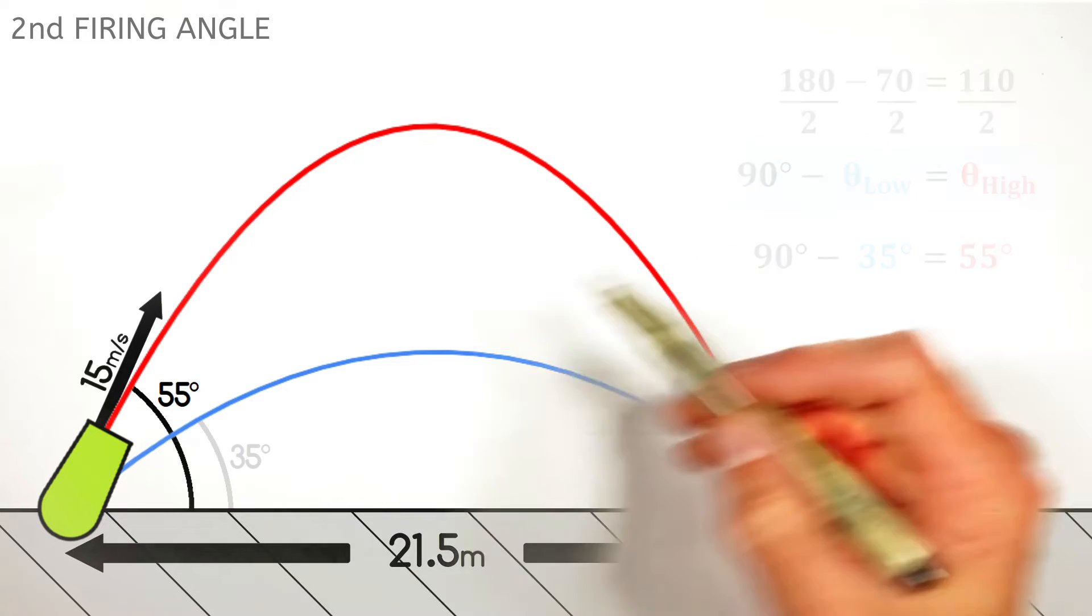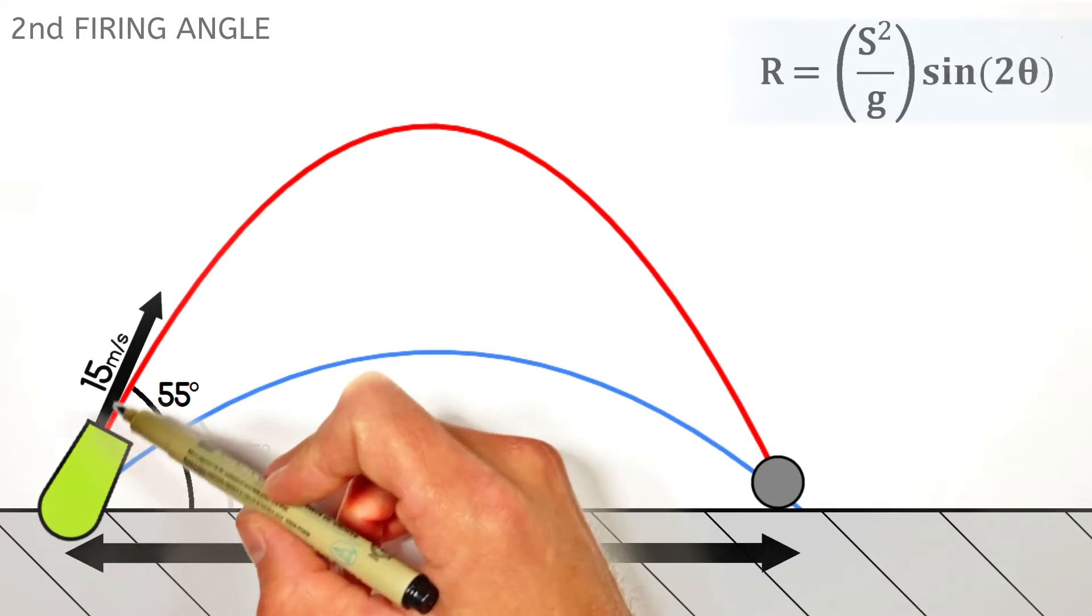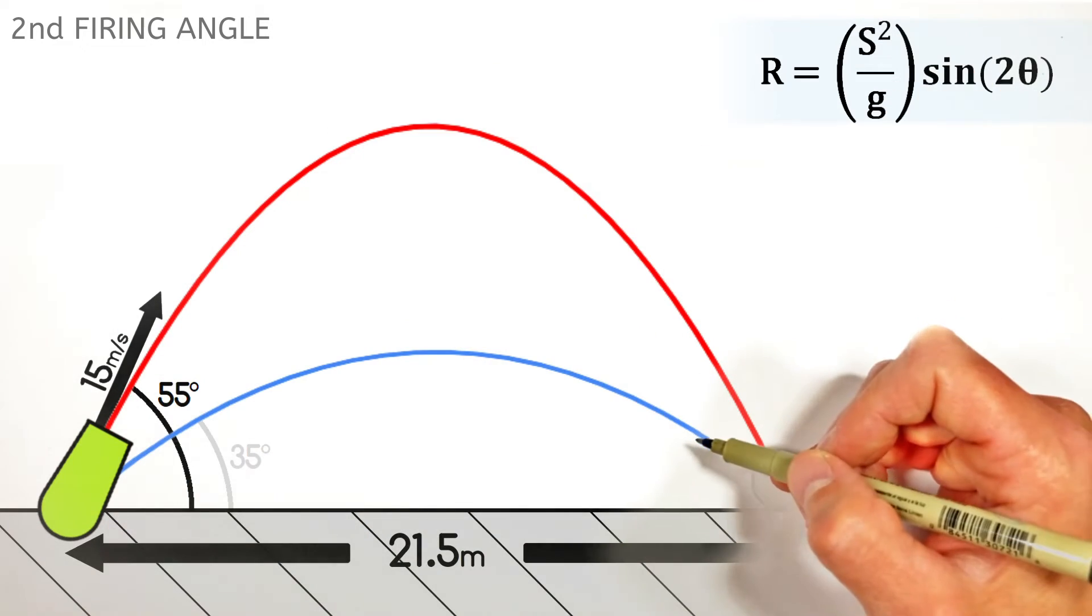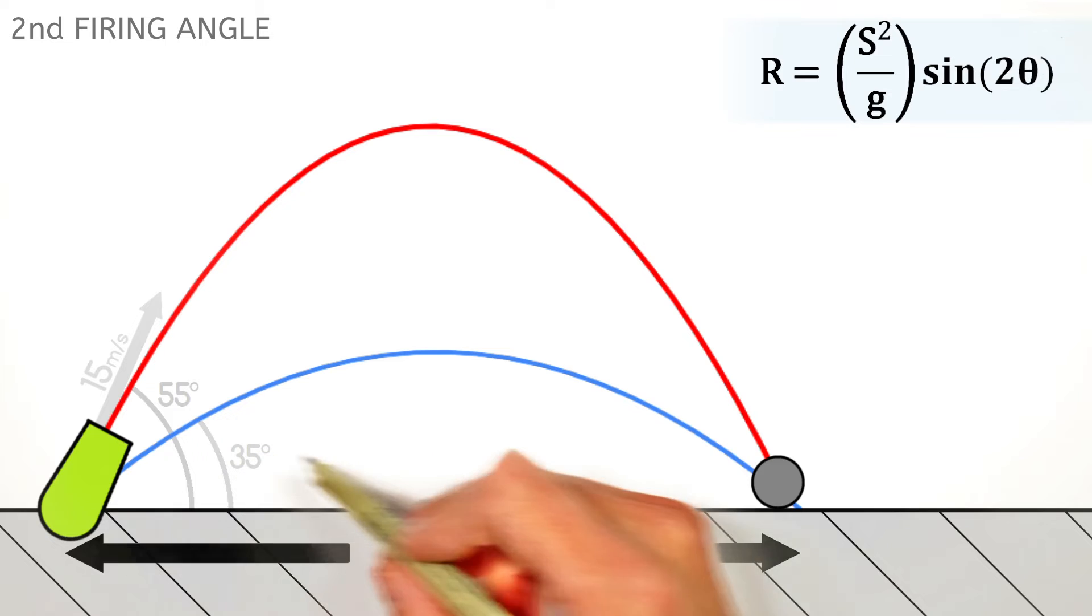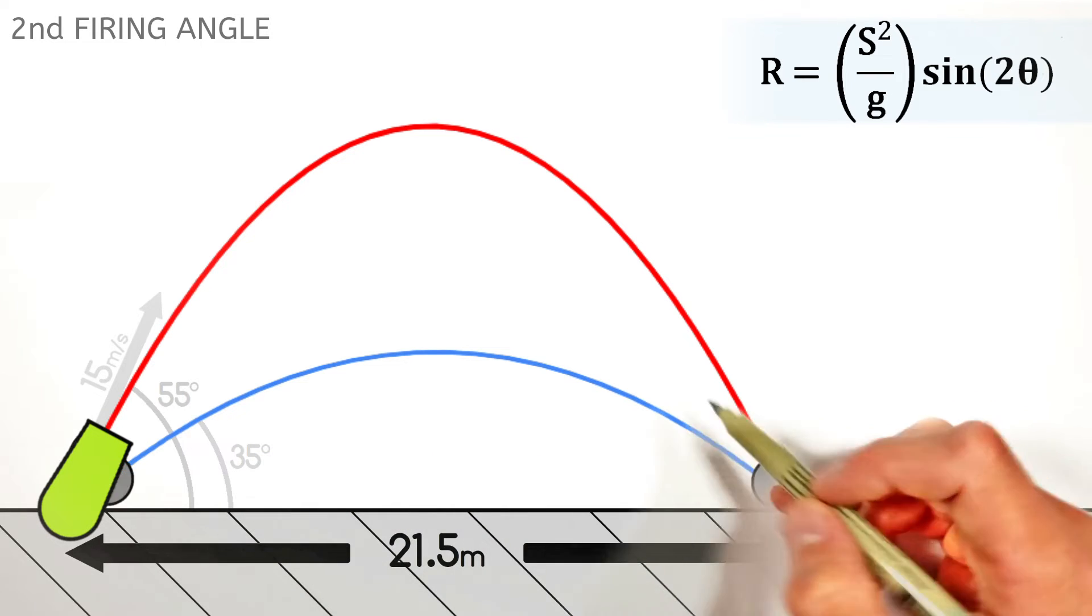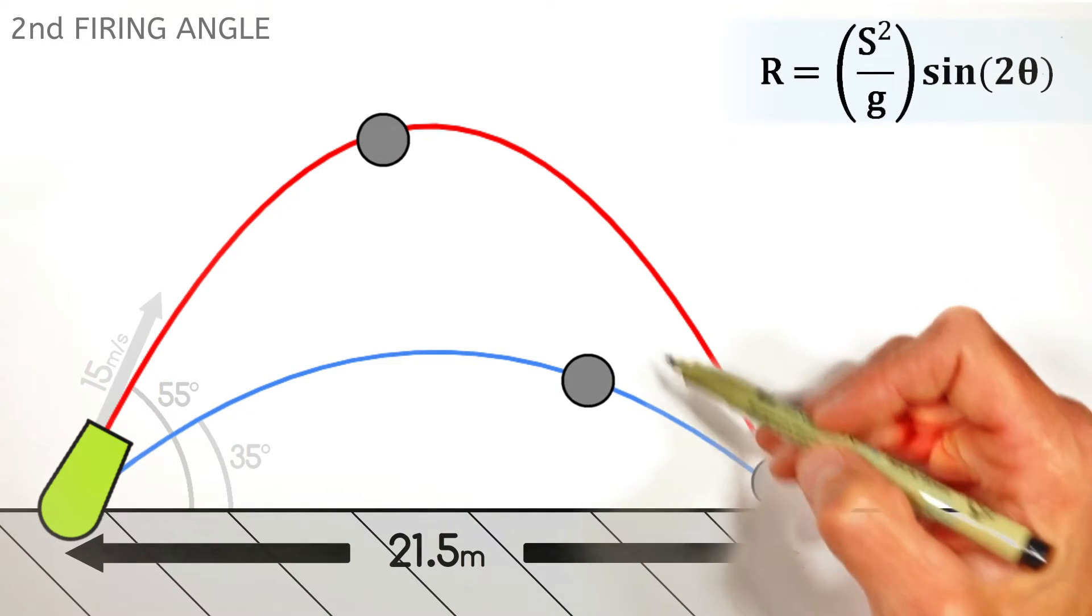And that might seem a little strange that we can fire a cannonball at two different angles and have it go the same distance. But realize, this cannonball travels the same 21.5 meters in two very different ways.